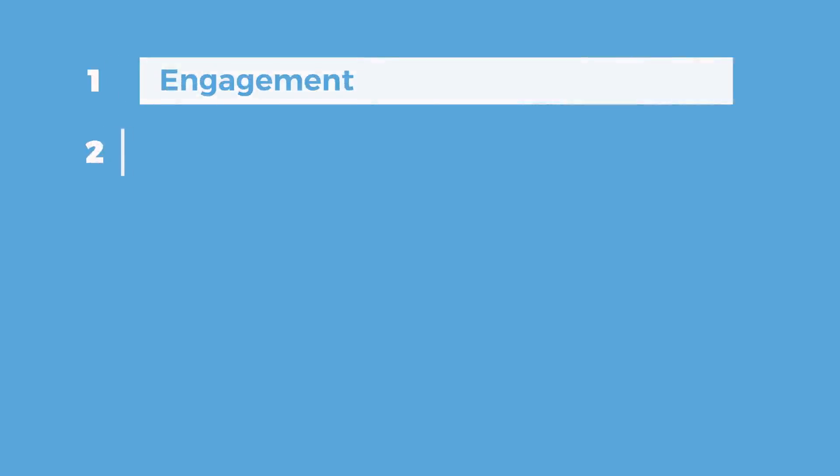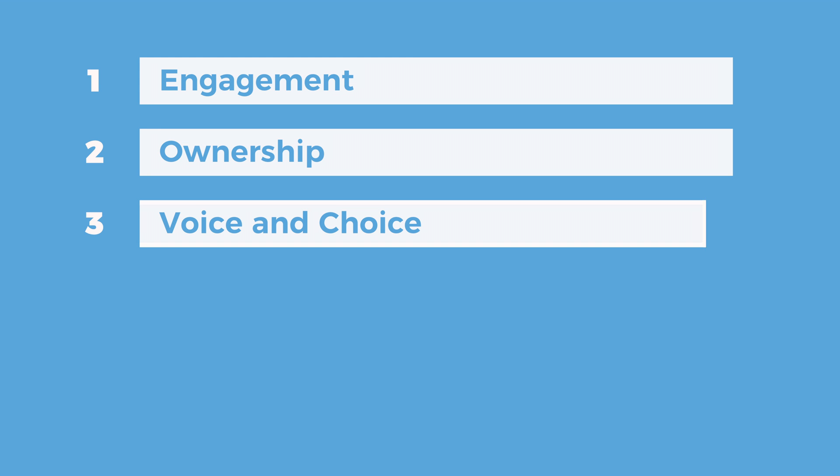One, my students become more engaged. Two, they take more ownership of their work. In addition to ownership, I also look at voice and choice. Students have the ability to choose which badge they want to attempt and go for, and they have the ability to take as long as they might need to achieve that badge.